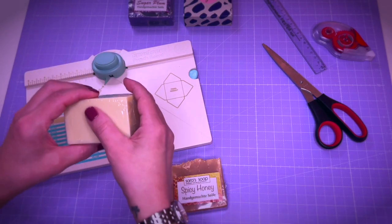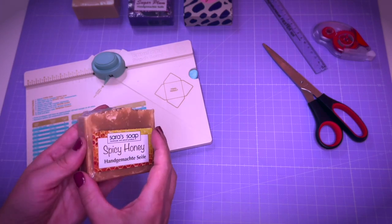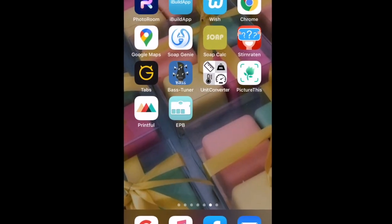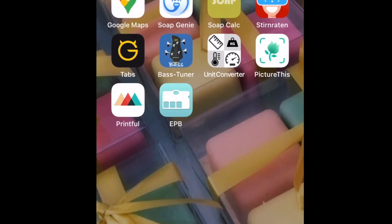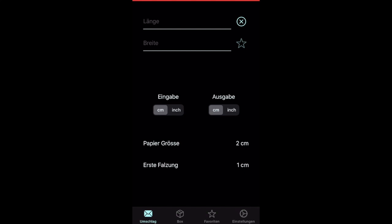So let's see how we determine the exact measurements for your customized soap box. There is an app you can download for $1 specifically for the envelope punch board. In that app you can calculate in both units, centimeters and inches.